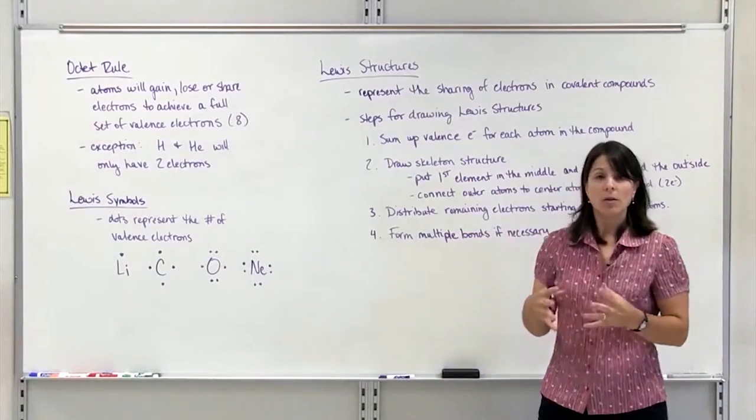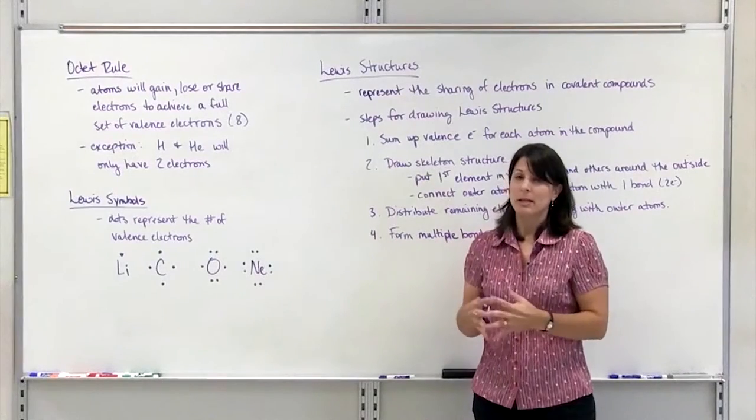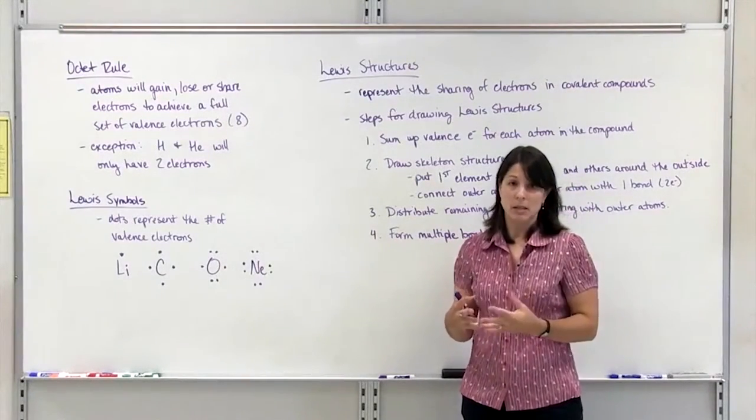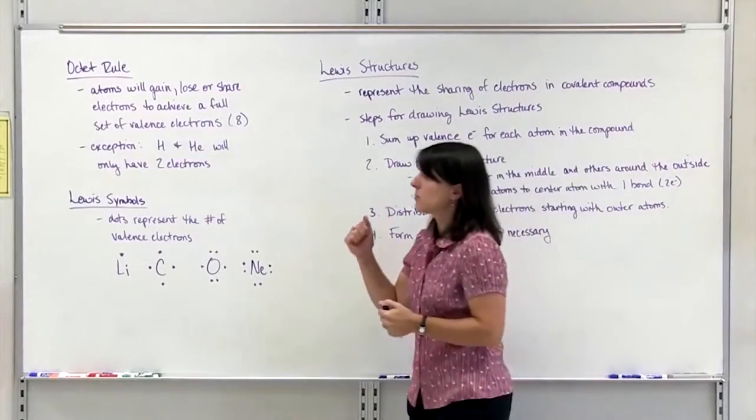So all the other elements on the periodic table basically want to be like a noble gas and have 8 valence electrons. And that's where the octet rule comes in.